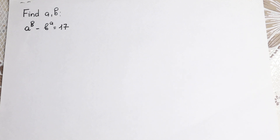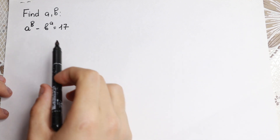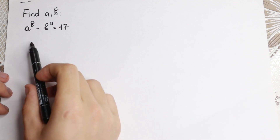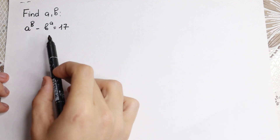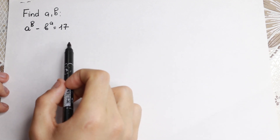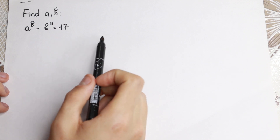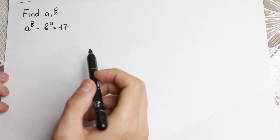Hello everyone, welcome back to Higher Mathematics. Happy to see you here, and today we have a really interesting algebra problem. We have a to the power b minus b to the power a equal to 17, and we need to find our a and b. How can we do this?